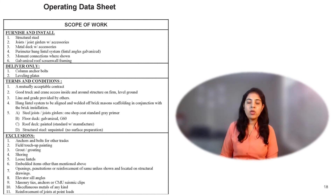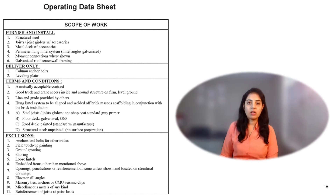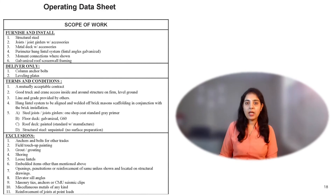Such a contract provision establishes a commonly accepted and well-defined line between what is and what is not to be furnished under a contract for structural steel. Without such a provision, the contract would need to spell out in considerable detail what is expected of both parties to prevent misunderstanding.